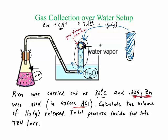It says calculate the volume of H2 released, and it gives us the total pressure inside the test tube is 784 torr. This reaction takes place at 30 degrees Celsius. There's actually two different gases inside here. One is of course the product.